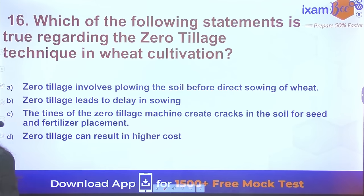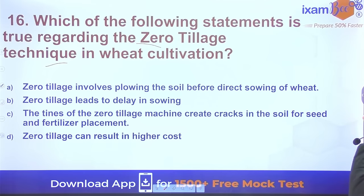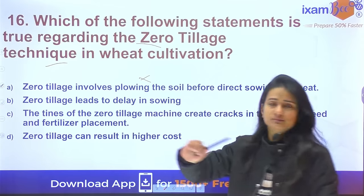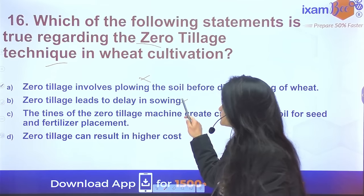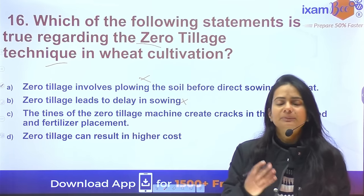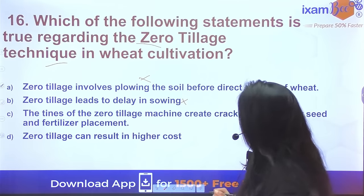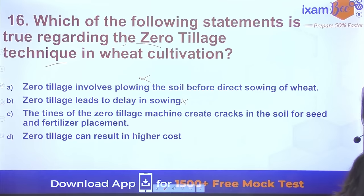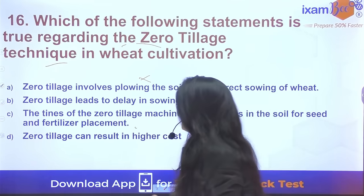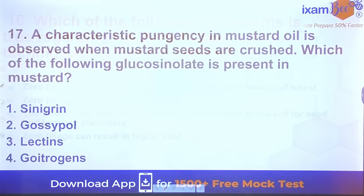Question 16: Which statement is true regarding zero tillage technique in wheat cultivation? Zero tillage does not involve plowing before sowing — that is incorrect. Zero tillage does not lead to delay in sowing either, because instead of spending time removing rice stubble, direct sowing is done between the stubble. The correct statement is that the tines of the zero tillage machine create cracks in the soil for seed and fertilizer placement. Zero tillage resulting in higher cost is also not correct.